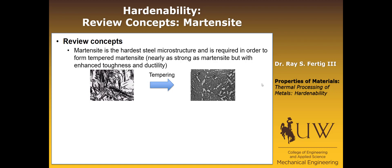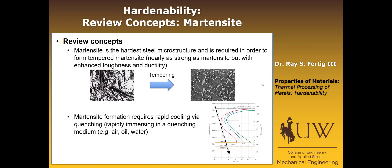In order to form martensite, remember that we require rapid cooling via quenching. Quenching is just rapidly immersing in some quenching medium — typically that's going to be water, air, or oil. In order to form martensite, we have to cool it fast enough to get past the nose of the phase transformation into the martensite-forming regions. So it's a hard steel; we have to quench it, cool it quickly to get to martensite.